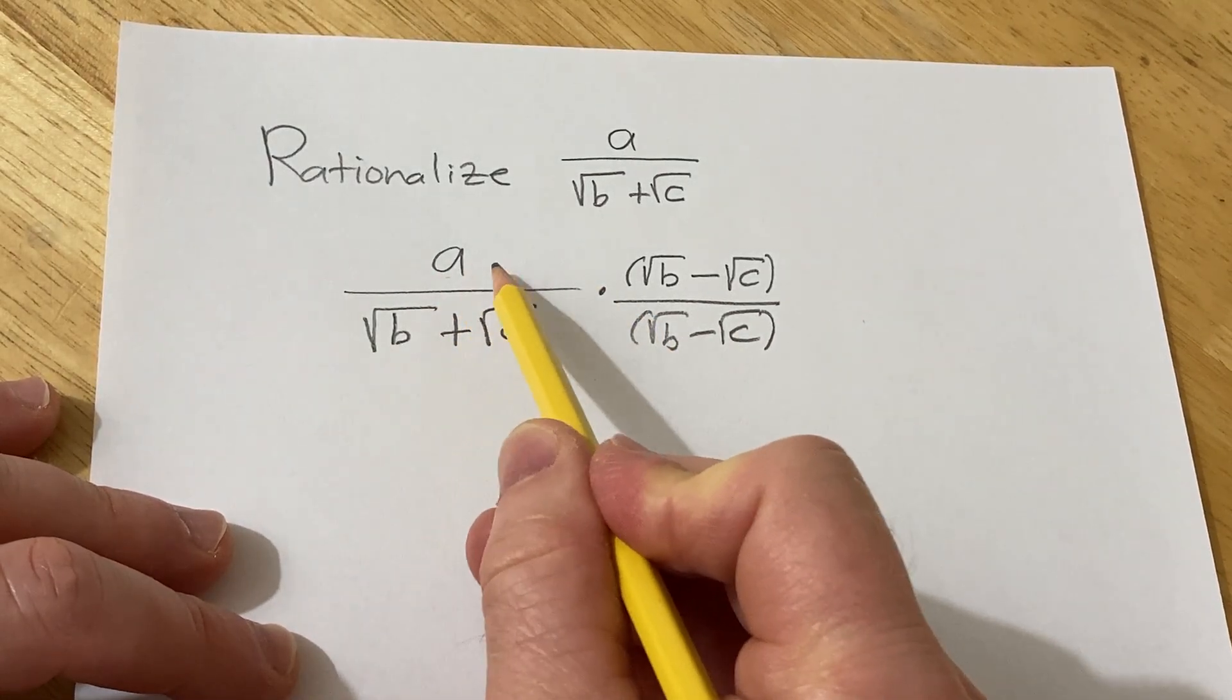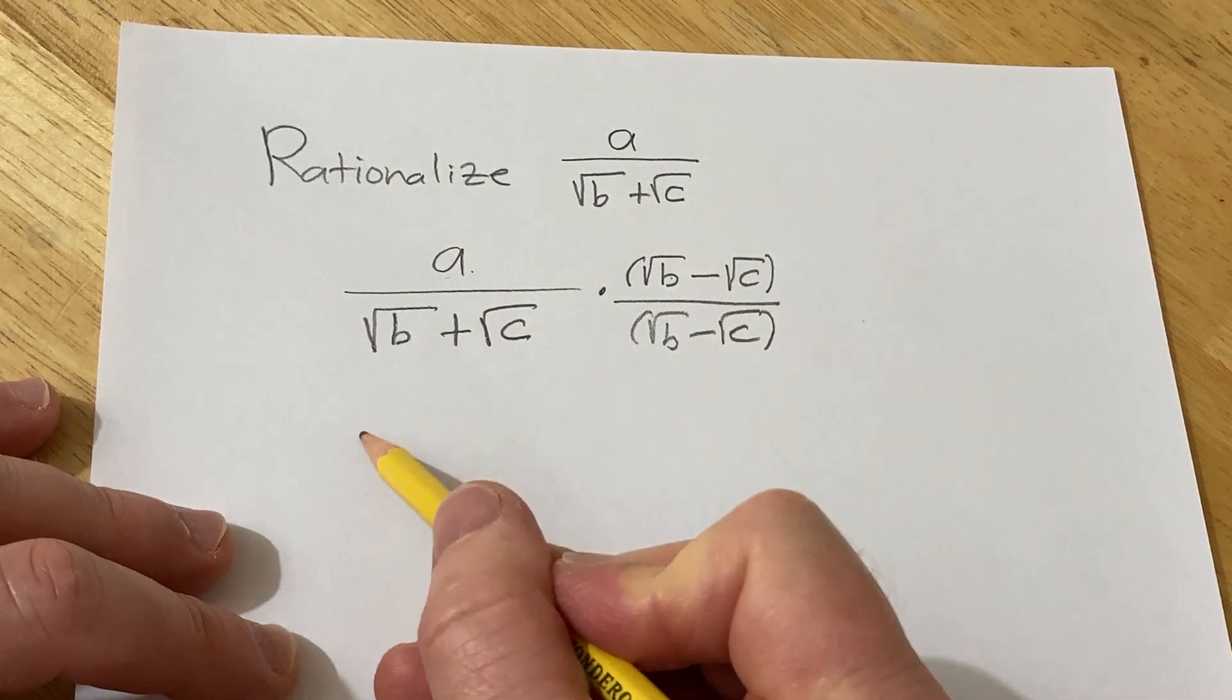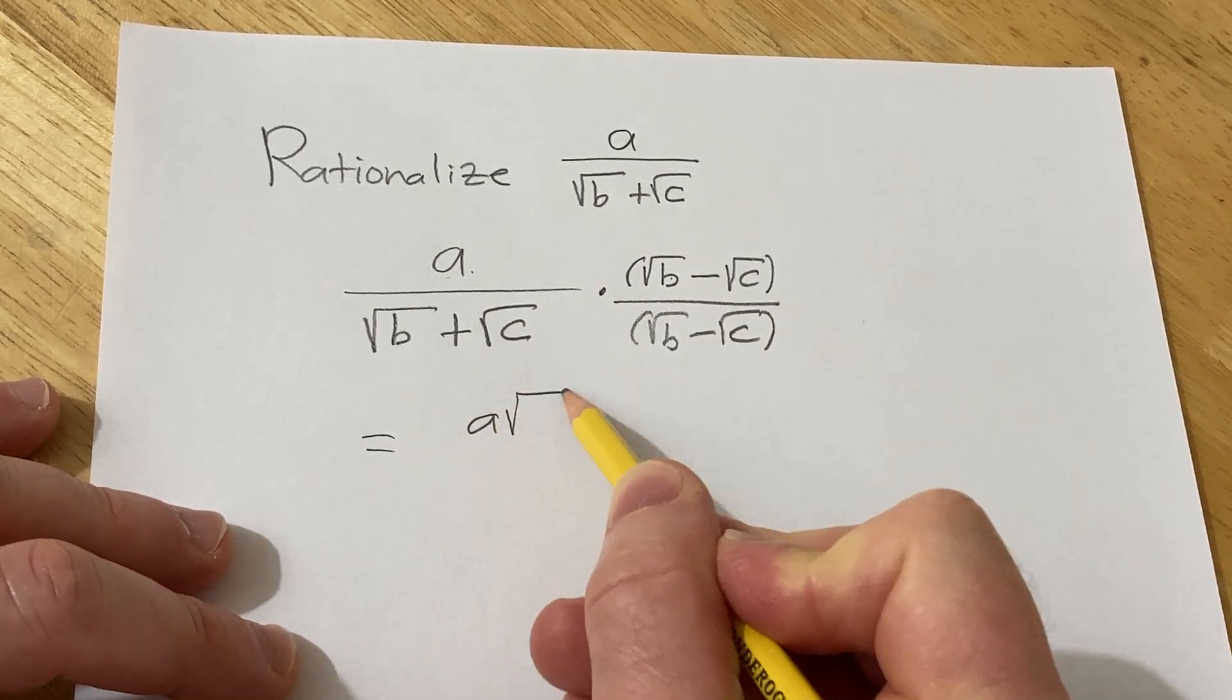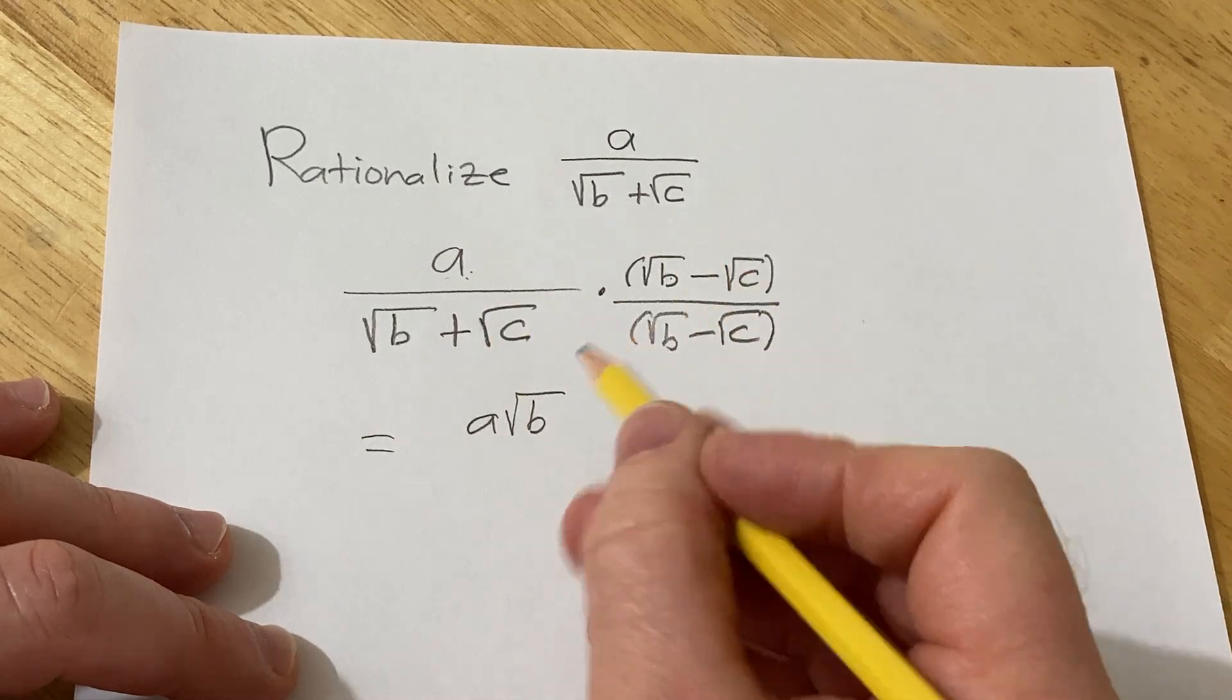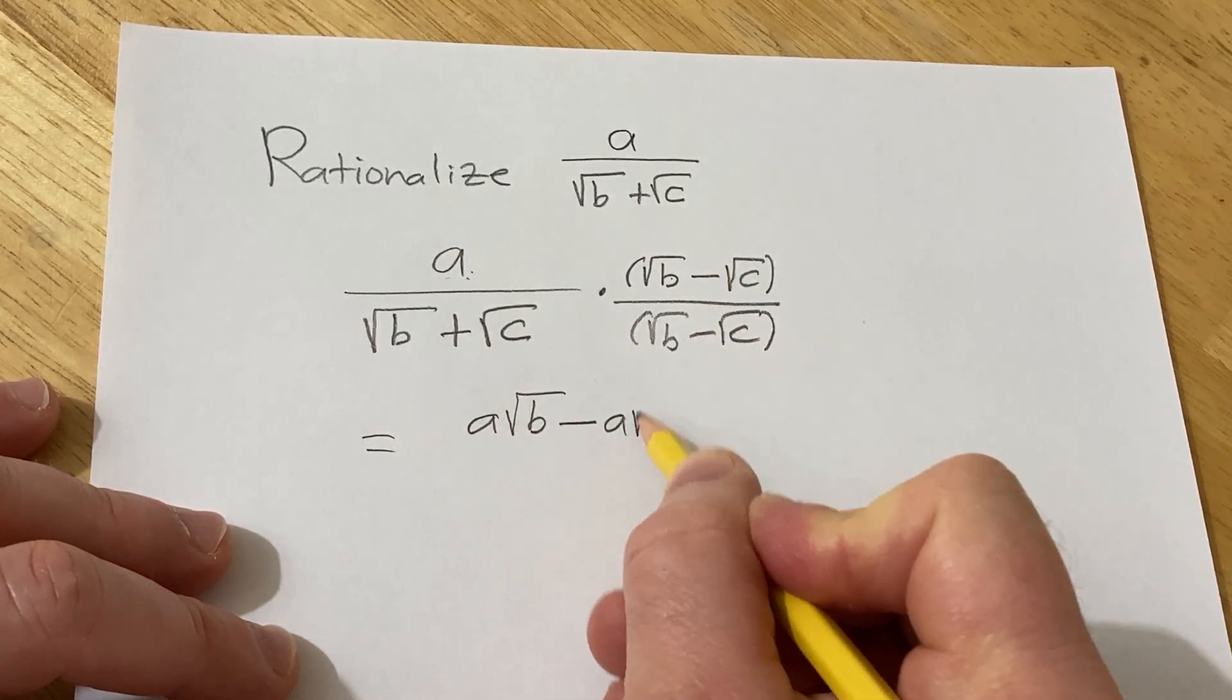In the numerator, now you just multiply across. a times the square root of b is going to be a square root of b. a times minus the square root of c is a minus the square root of c.